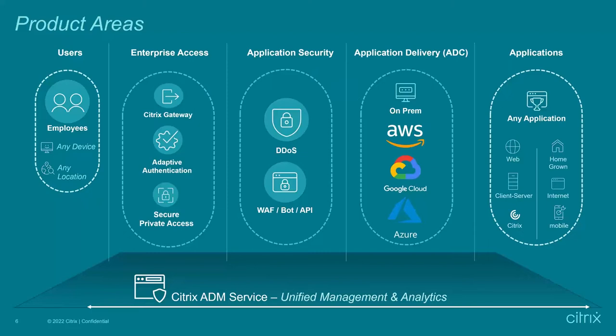One of my colleagues ran a proof of concept at a financial institution in London. We put in the ADC for core load balancing, but also deployed ADM so the customer could easily amend their application configuration without getting into the weeds of the ADC directly. They had a nice management console that deployed settings and allowed changes to be pushed across multiple ADCs simultaneously. ADM Service is a double act with the ADC — it provides a way to unlock value the ADC has been delivering for a long time.